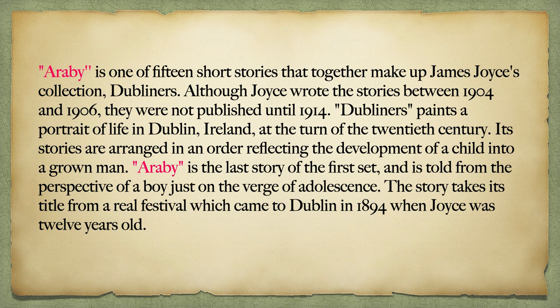Its stories are arranged in an order reflecting the development of a child into a grown man. Araby is the last story of the first set, told from the perspective of a boy just on the verge of adolescence. The story takes its title from a real festival that came to Dublin in 1894, when Joyce was 12 years old.